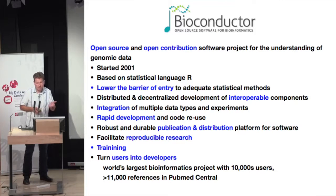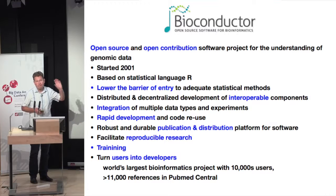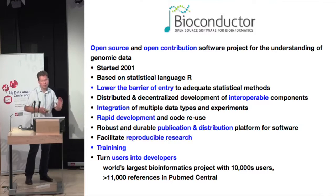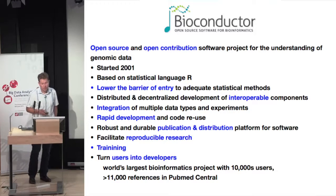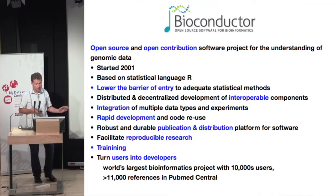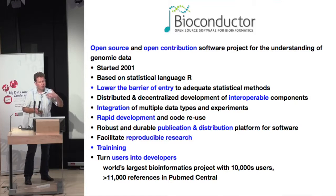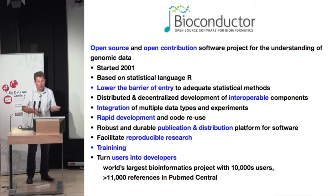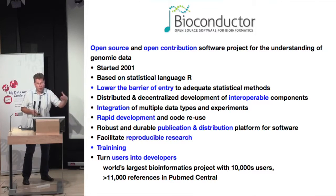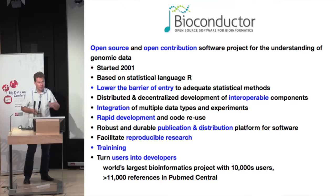We want to integrate multiple data types — drug screening data, imaging readouts, genome sequences, RNA-seq profiles, and so on. Biology is moving very fast, measured in weeks and months, so we need to be able to rapidly develop methods — getting from an idea to a functioning prototype maybe in an afternoon. At the same time, we also need a robust and durable publication and distribution platform for software. Once software has a shape and is useful, it needs to be published, made available, and probably needs to be stable for several years for the community. We're very keen on reproducible research, and training is very important — on both sides: training computer scientists to learn more about biology so they can write useful software, and training biologists and clinical researchers to use adequate statistical methods.